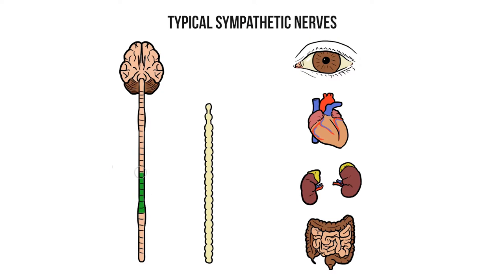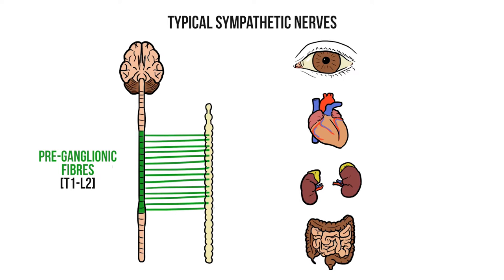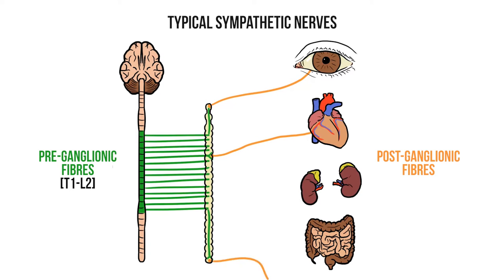Previously we saw how preganglionic fibres leave the spinal cord between the levels of T1 to L2. These fibres enter the sympathetic chain and travel to different vertebral levels before synapsing in the ganglia. We then have postganglionic fibres that leave the chain and travel out into the body.